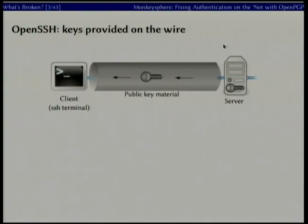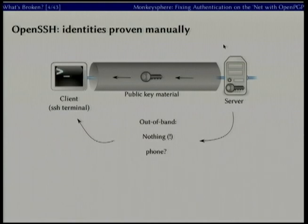SSH provides raw key material to you when you first attempt to log in, transmitted as part of that initial connection. If you want to do any verification of that, you have to find some mechanism to do it — typically you don't. Alternatively, you have to call the systems administrator, be in the same room and ask what the key is. So you need an out-of-band mechanism for determining whether this server is, in fact, who it claims to be.